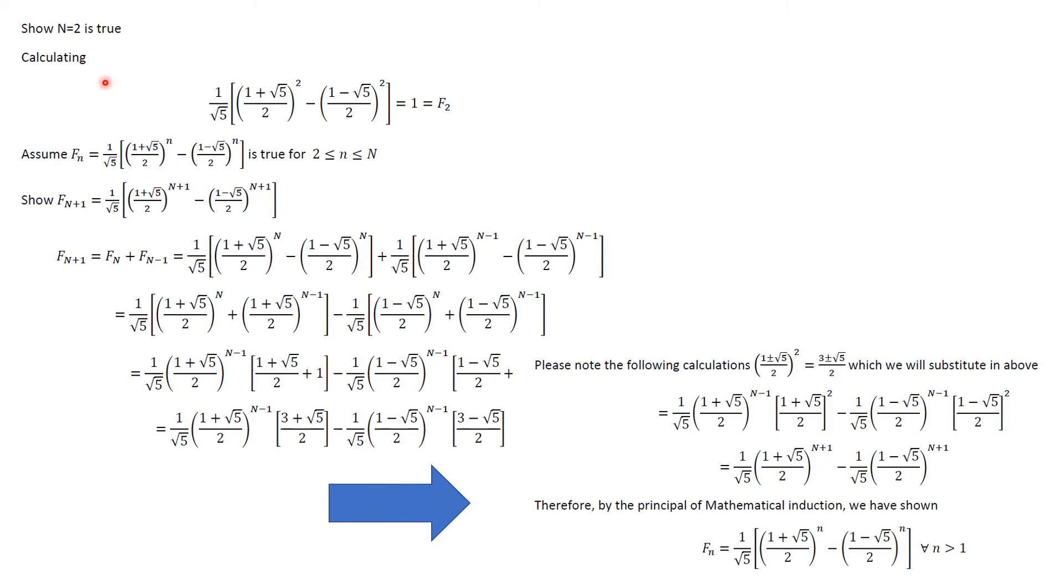And here's the last one. We're going to start because we wanted to do it for n bigger than 1. And that means we start with n equal 2. So we're going to show that n equal 2 is true. So what we're doing is we're using n to be 2. We just square that and we do the calculation. And what happens is you've got to do a little bit of algebra. You're squaring this binomial and this binomial. But when you do the calculation, you get that this is 1. And 1 is what F2 is. So it's true when you're at 2.